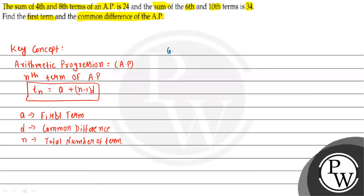Given: the sum of the 4th and 8th terms — T4 + T8 = 24. The other condition given is that the 6th term plus the 10th term equals 34. We have to find the first term and common difference.